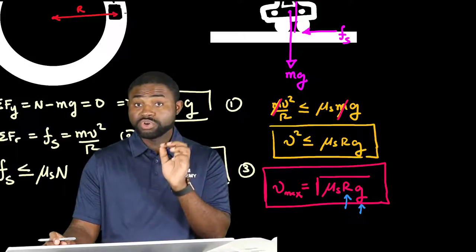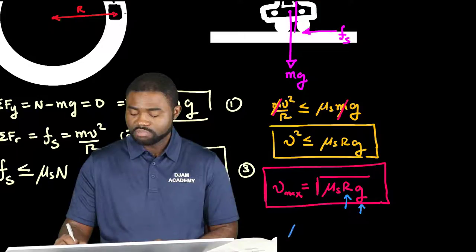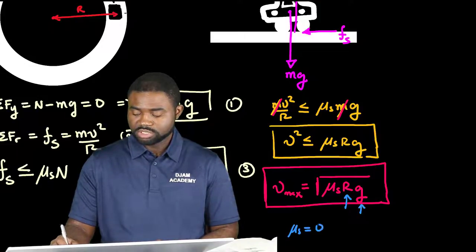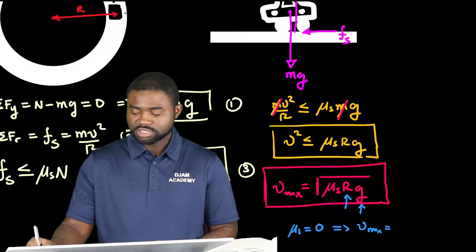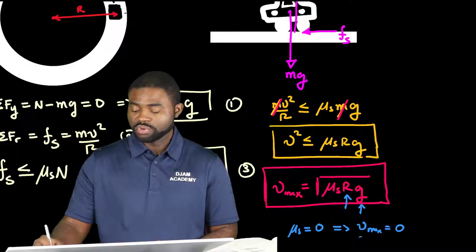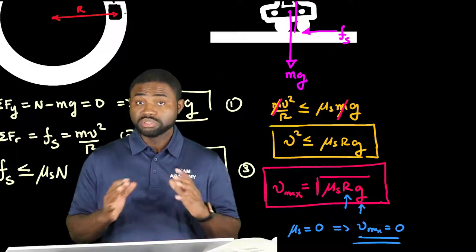But if the road is coated with ice, it means that μs is essentially zero, which implies that vmax is essentially zero. In other words, you cannot even drive around that circular track. Not at all.